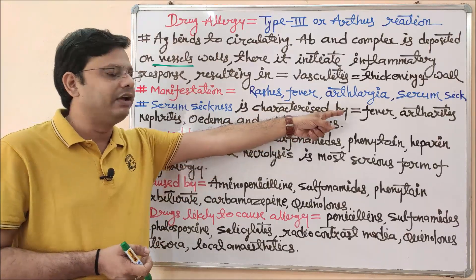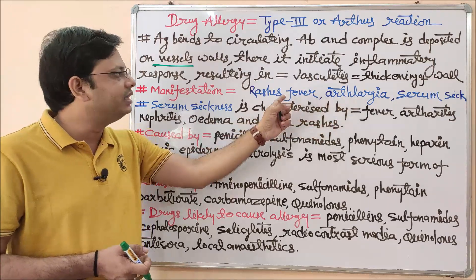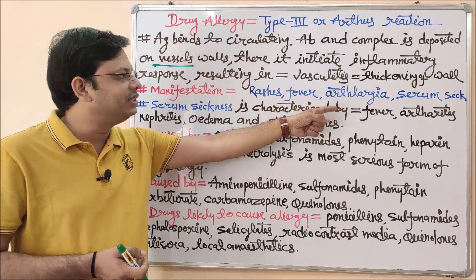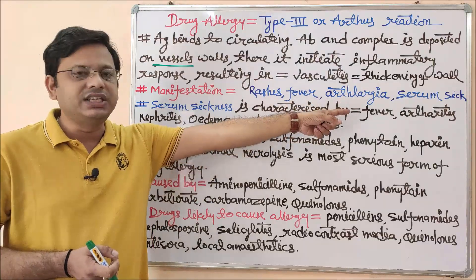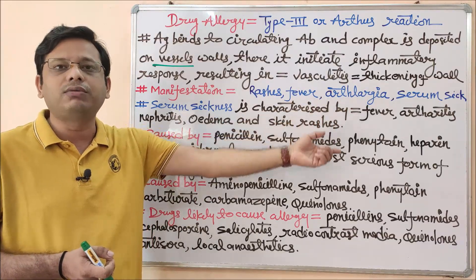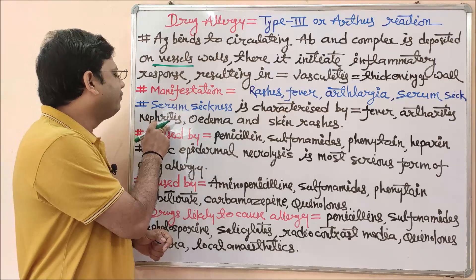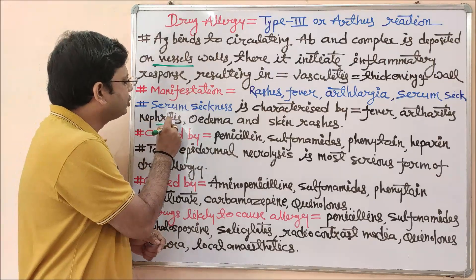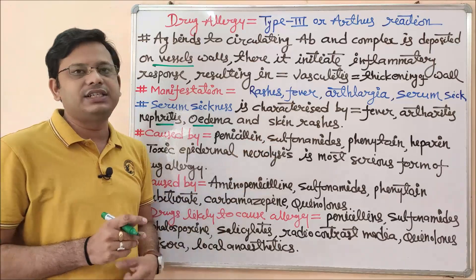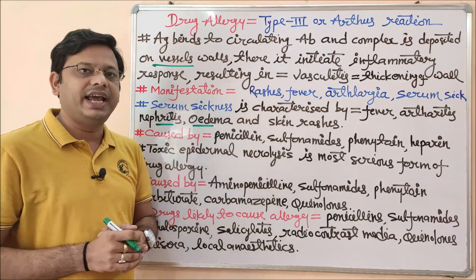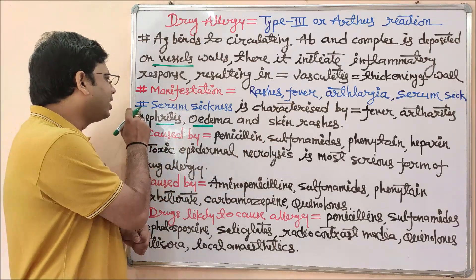The characteristic features of serum sickness include fever along with arthritis — inflammation of joints, specifically the knee joints — then nephritis, inflammation of nephrons, edema, and skin rashes, which can be characteristic symptoms of serum sickness.